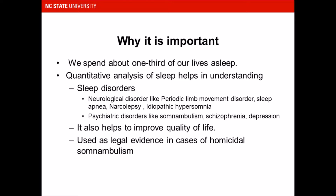Understanding these processes quantitatively helps us understand many things. First is sleep disorders. Sleep disorders have two types. First is neurological disorders like periodic limb movement, where a person involuntarily moves their limb while asleep, or sleep apnea, which involves abrupt breathing patterns while asleep. Narcolepsy is abrupt sleep while a person is awake — they might fall asleep while talking to someone, which really hinders their daily work. Then there is idiopathic hypersomnia, which is daytime sleepiness that generally results in a lower quality of life.